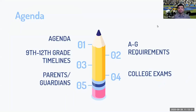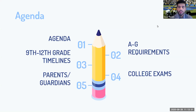For today's agenda we will be going over the A to G requirements — Brenda will be breaking that down in the next slide. We will also be going over the 9th through 12th grade timelines so you can get an idea of what to expect, as well as college exams and parent and guardian involvement, and how you can best support your student.